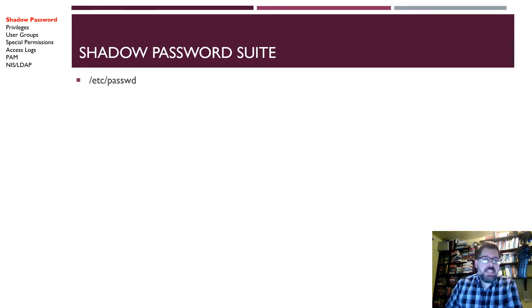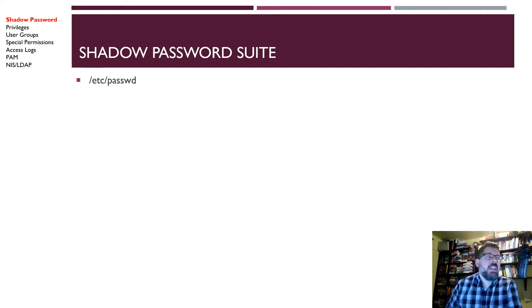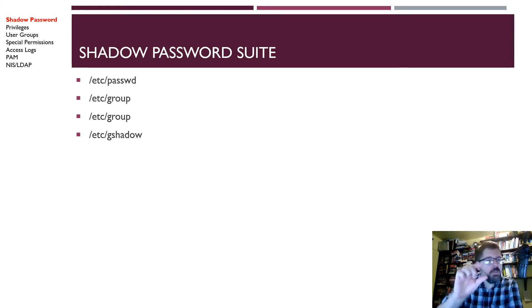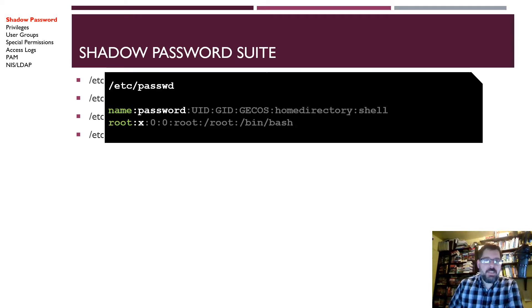The Shadow Password Suite is known as traditional Unix authentication. You'll have a couple of files: the /etc/passwd file, which contains all user accounts; a group file, which contains all your group names; and then the shadow file. I have it in there twice for some reason — one of those should say /etc/shadow. I apologize for that, but I do show it in my animation.